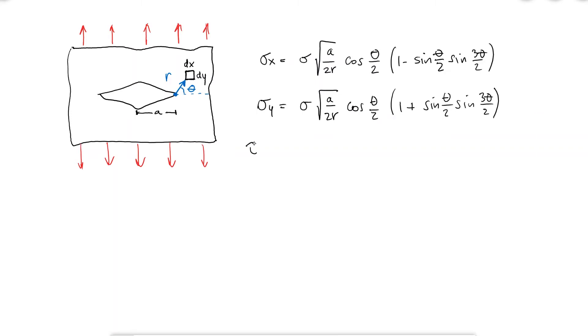We have expressions for sigma x, sigma y, and tau xy. If we look at the expression for sigma y when theta is zero, which is the plane where the crack exists, we obtain an expression that depends on the external stress, the crack length a, and the distance to the crack r.